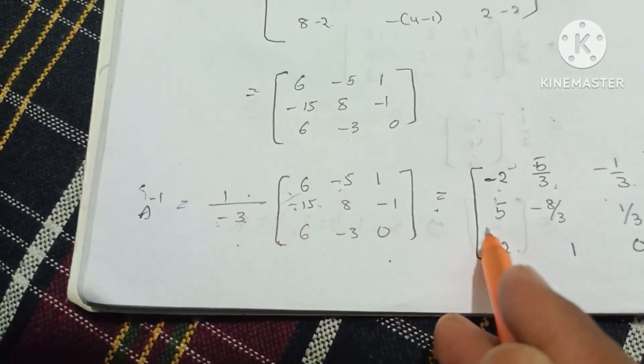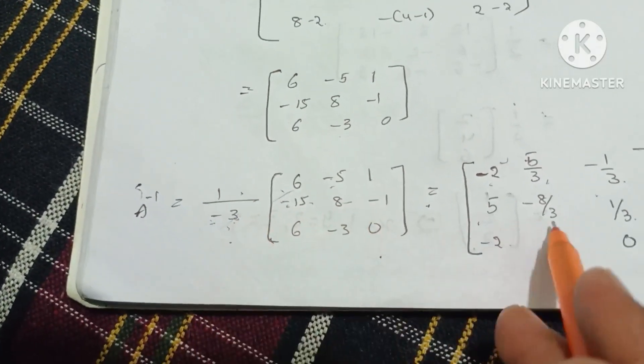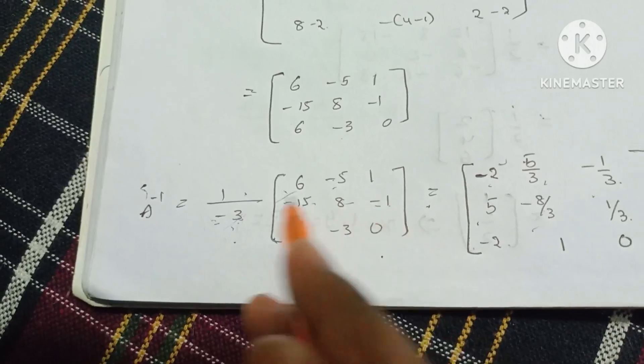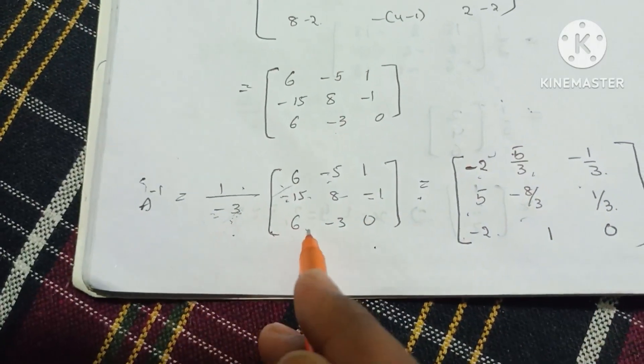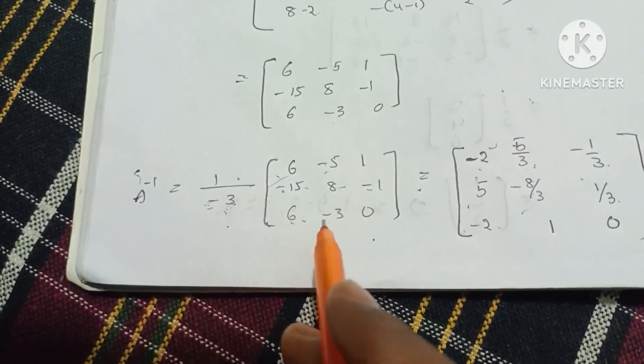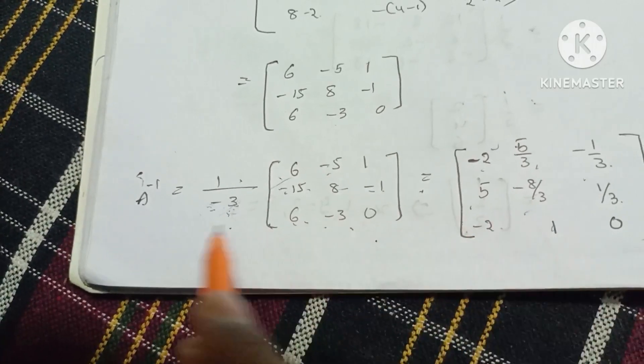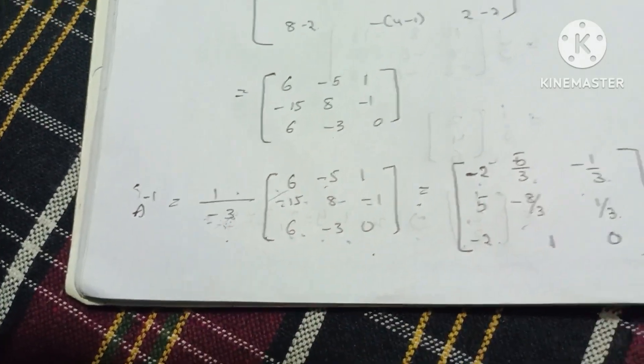Next, minus minus cancel is 5 by 3, minus 1 by 3. Next, 3, 5 is a minus minus cancel is 5, minus 8 by 3. Next, minus minus cancel is 1 by 3. 3, 2 is a 6, so minus 2. Minus minus cancel is 3, 1 is a 3. Next, minus 3 into 0 is 0.